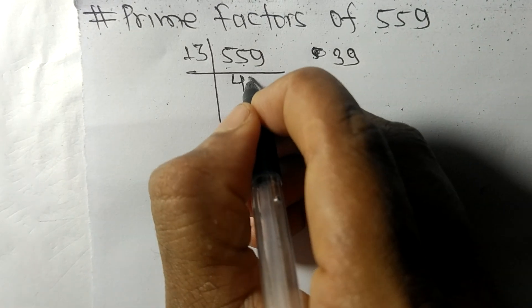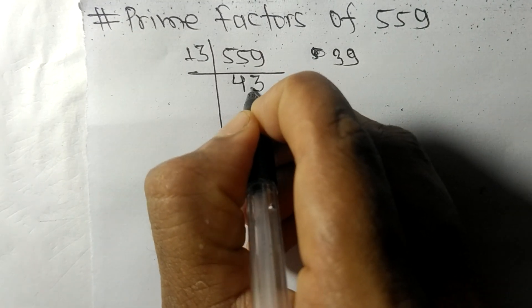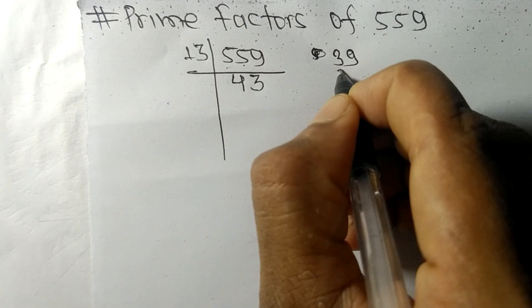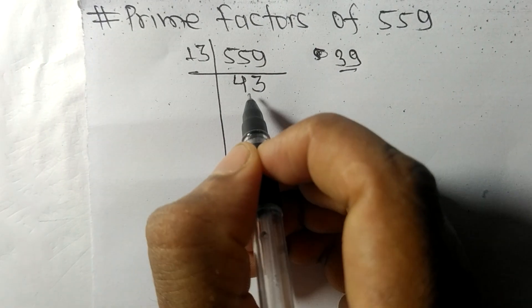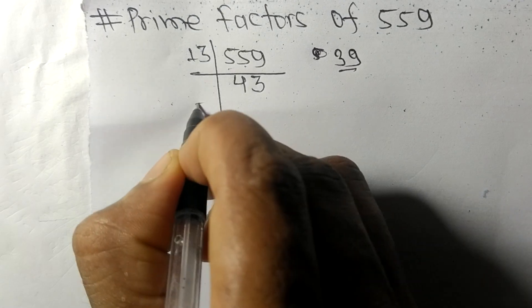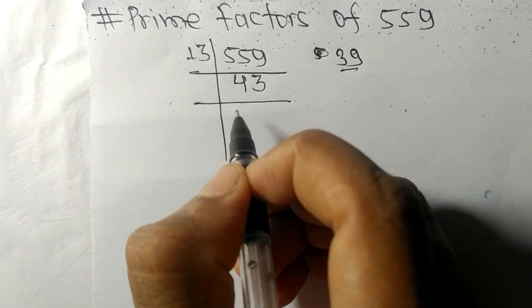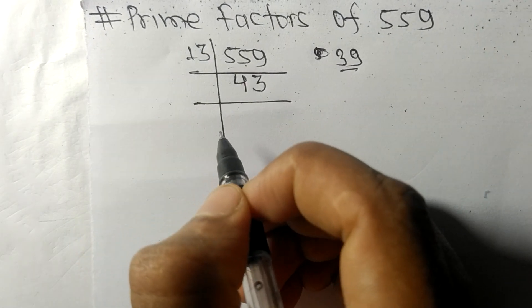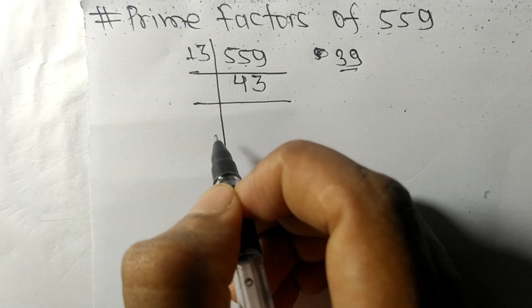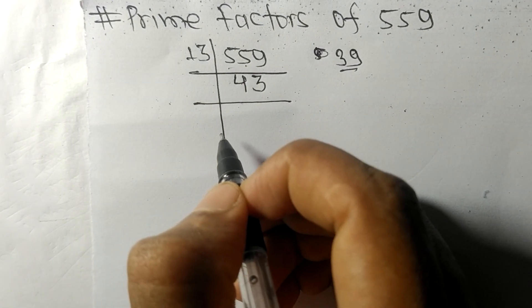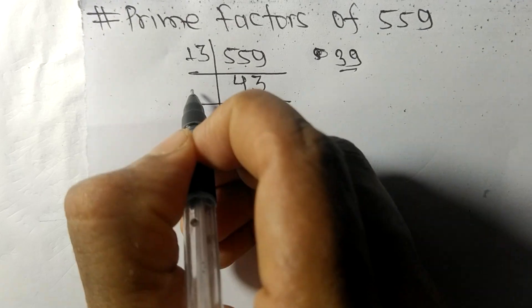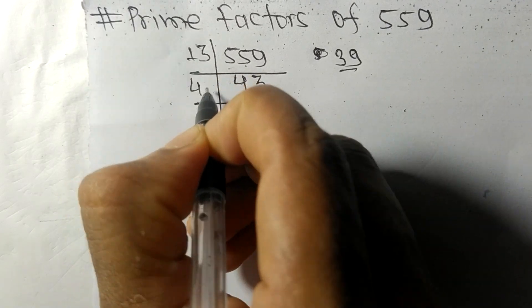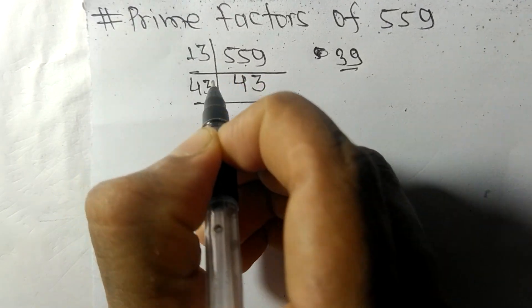13 times 3 means 39, so now we get 43, which is a prime number — divisible by 43 itself.